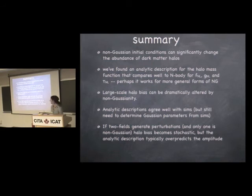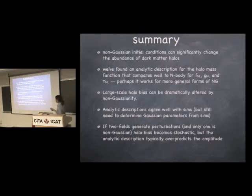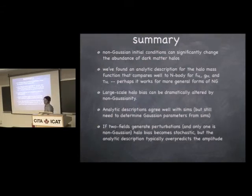In conclusion, non-Gaussian initial conditions can significantly change the abundance of dark matter halos and their clustering. We've checked a few different types of primordial non-Gaussianity — these are all local models, but they have quite different features both in the amplitude of the different cumulants and the shapes of the trispectrum. We found one formula — the Log-Edgeworth prescription — that works for all of these models for the mass function. We checked large-scale halo bias for the g_NL and tau_NL cases and found good agreement. The stochastic bias for tau_NL is something we still need to follow up on.